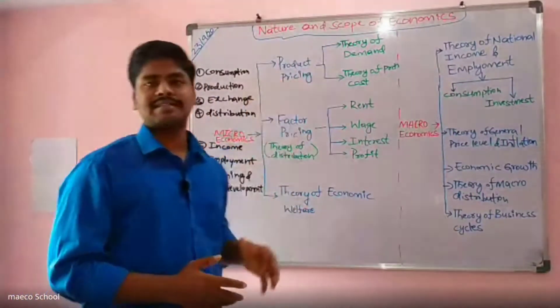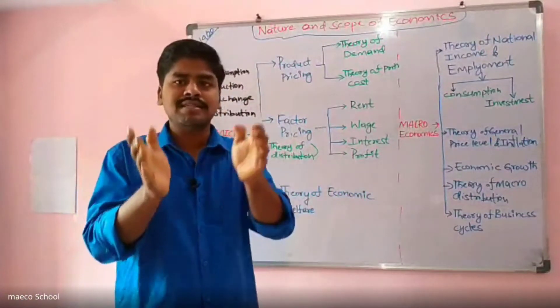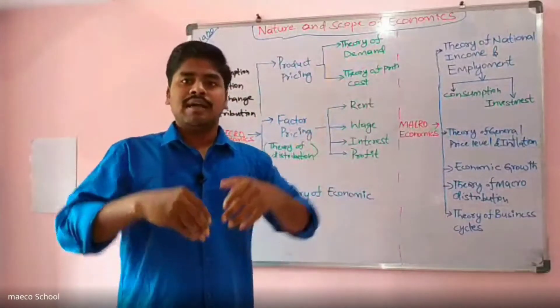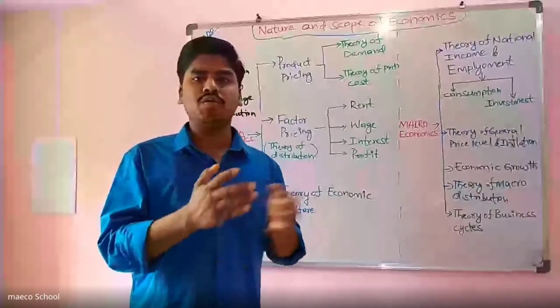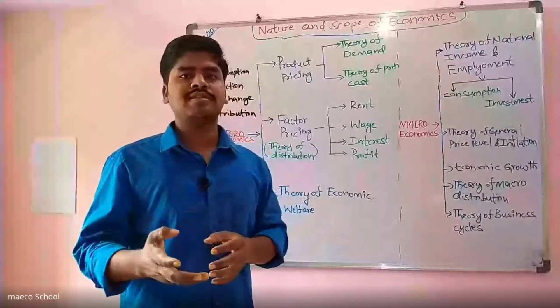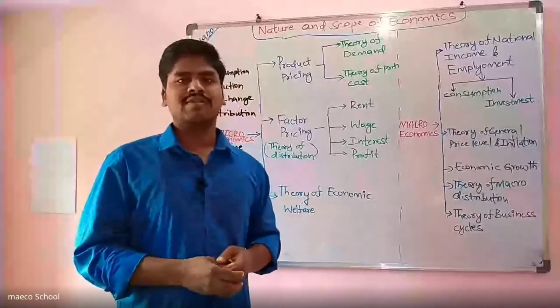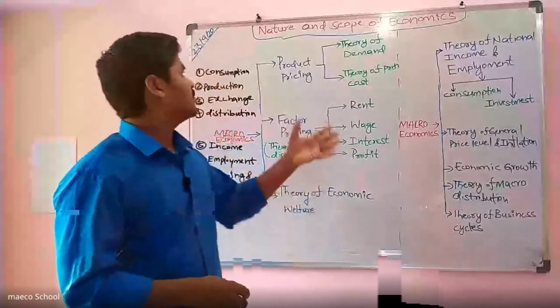Product pricing involves understanding demand for goods in the economy. If there is no demand, there is no production. First the consumer wants to demand goods and services; that creates the possibility for production. We study consumer behavior — what consumers are trying to consume and how they behave in the market. This is based on the theory of demand, including the law of demand, law of equimarginal utility, and law of diminishing marginal utility.